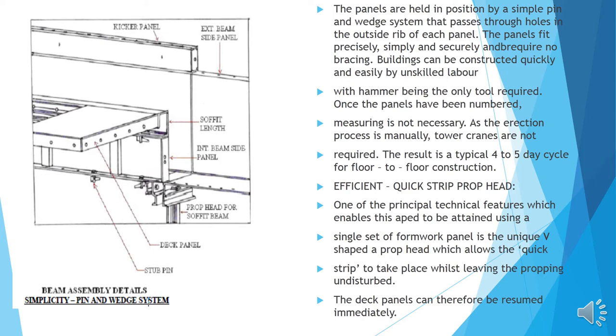The result is a typical 4 to 5 day cycle per floor to floor construction. Efficient quick strip period prop head. One of the principal technical features which enables this speed to be attained using a single set of formwork panel is a unique V-shaped prop head which allows the quick strip to take place while leaving the propping undisturbed. The deck panels can be removed immediately.